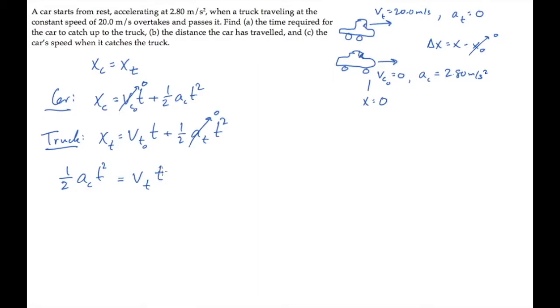Setting those two equations equal gives us this. We can cancel one of the times t, because we're not interested in the solution when t equals 0, and solve for the time t. It equals the velocity of the truck divided by half the car's acceleration. Rearranging and substituting the known values, we find that the car catches the truck after 14.3 seconds.